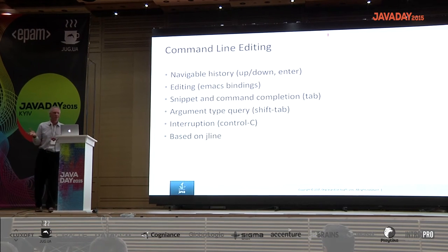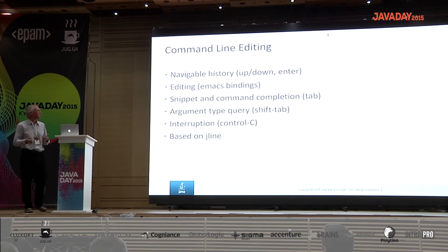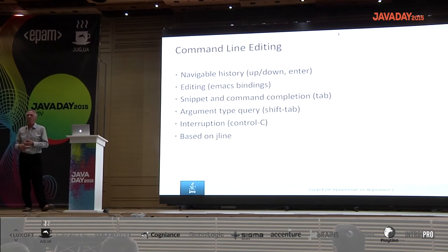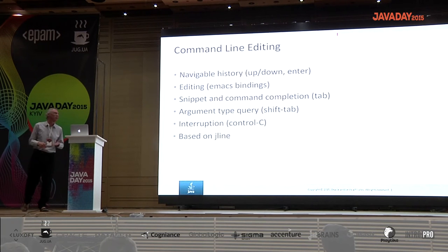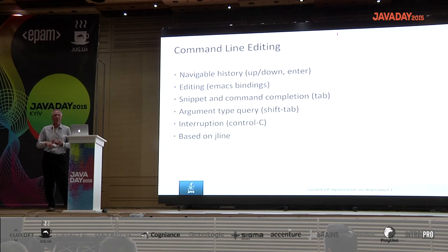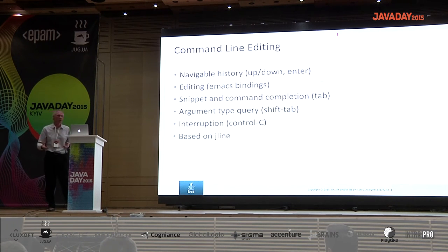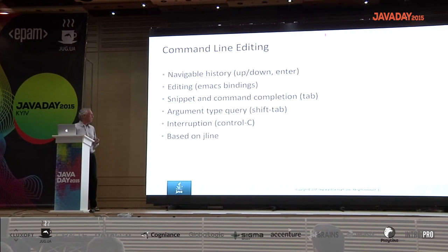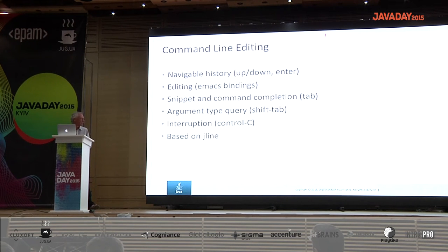There's command line editing and history. You can go up and down through the shell history just like in any other shell and hit Enter to re-execute something. You can edit those things with Emacs bindings, and use Tab to complete a snippet or a command. You're typing in a method call — you can look at the argument types with Shift-Tab. If a snippet is in an infinite loop or running too long, you can hit Control-C. This functionality is all based on standard JLine.